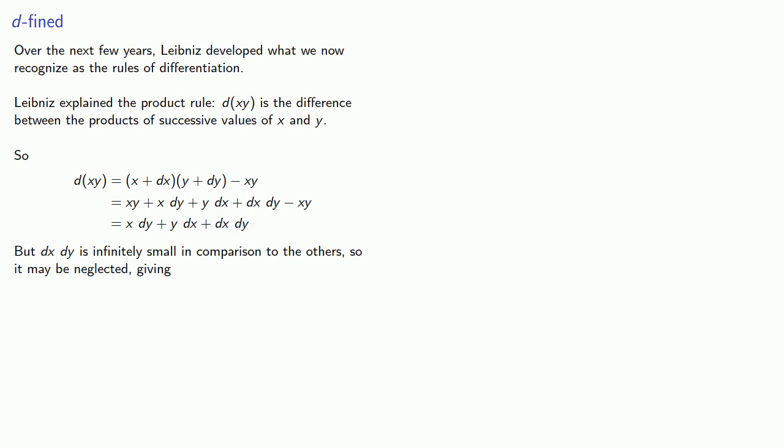This product dx dy is infinitely small in comparison to the others. So it may be neglected, giving us d(xy) is just x dy plus y dx. And this is the product rule we're all familiar with from calculus.